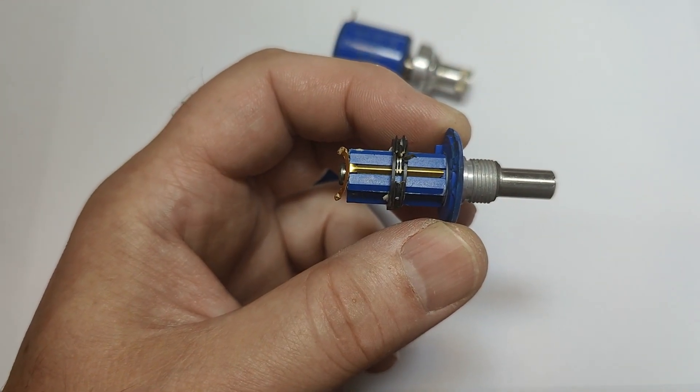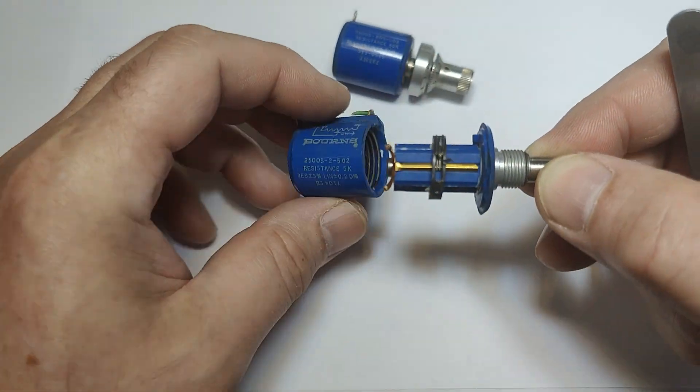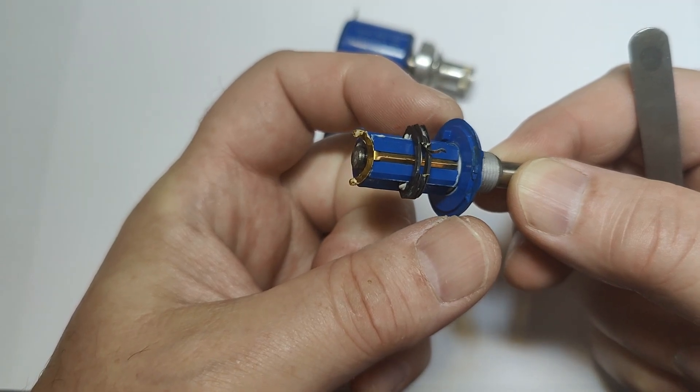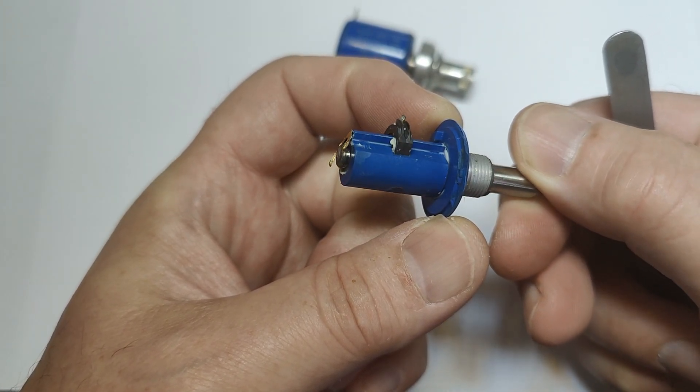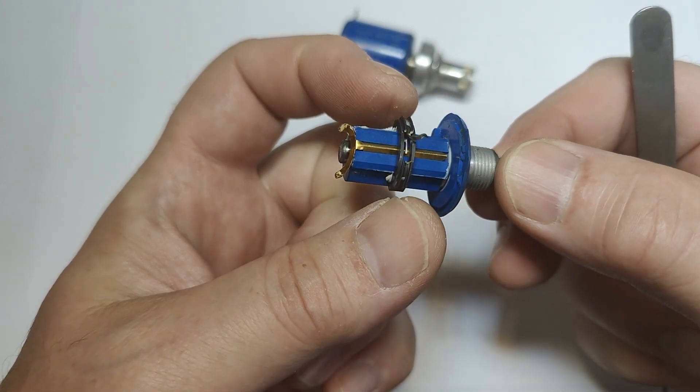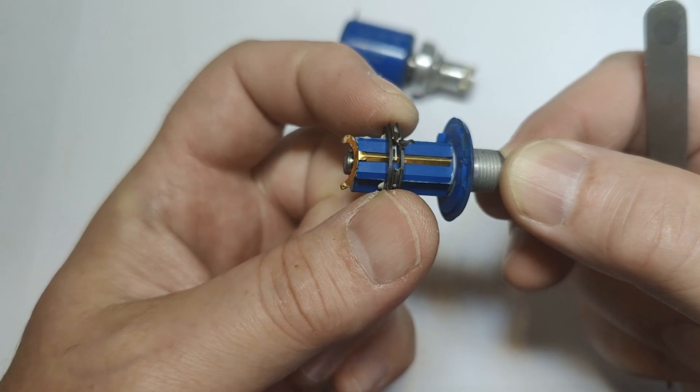So that is more or less how that part works. So when you turn this - this one is of course normally glued to this one, this is where I hold here - so when you turn this around this part here moves up and down.